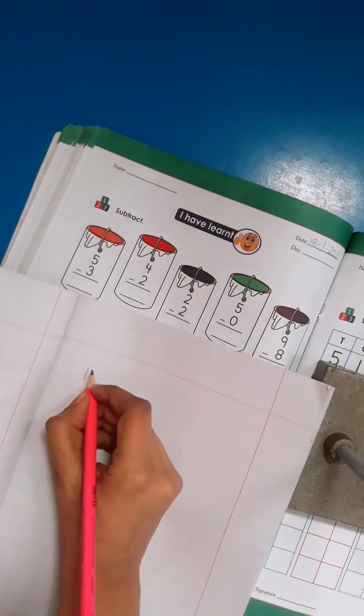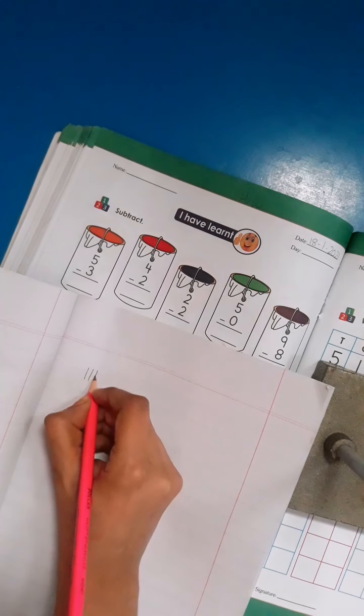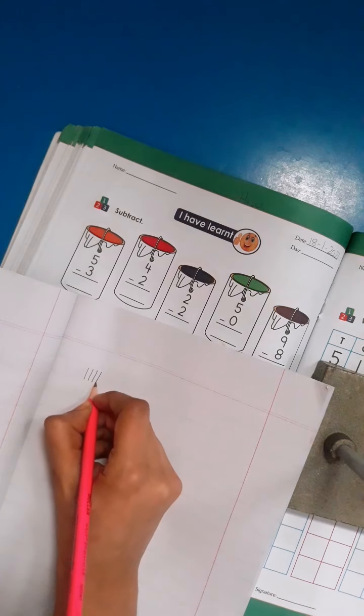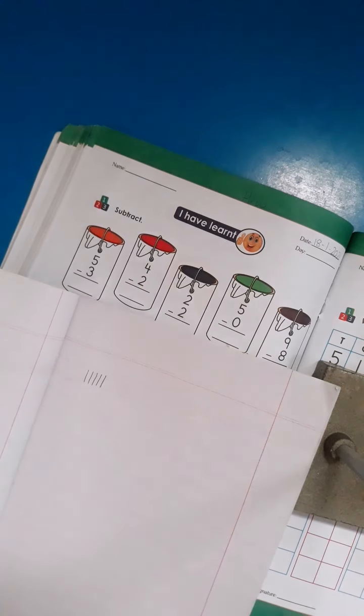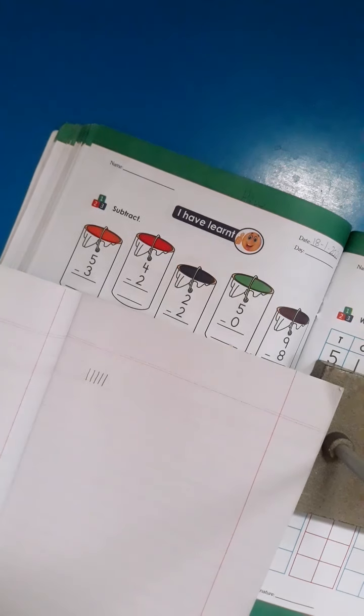I will draw 5 lines here. 1, 2, 3, 4, 5. How many lines you can see here? 5 lines.